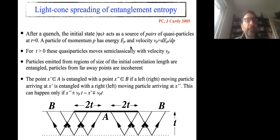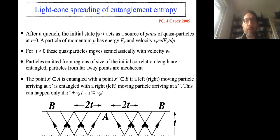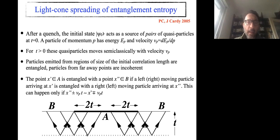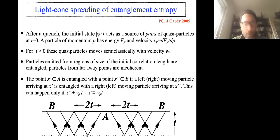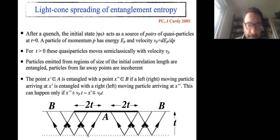Why pairs of quasi-particles? It's an assumption that later turned out to be the only configuration compatible with integrability. Any point in the system emits quasi-particles; there is no entanglement or correlation between particles emitted at different points. Particles emitted from the same point — more precisely from a region of the size of the initial correlation length — are entangled. As time passes, these particles move farther away, bringing entanglement to farther away regions. Since they move ballistically, at time t the entangled region has size of order v_p × t.